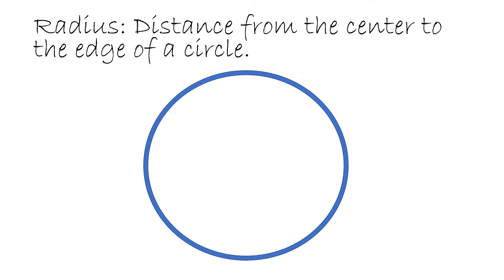The radius is the distance from the center to the edge of the circle. So here we have a blue dot — that's the center of the circle — and watch the red line from the center to the edge. That is the radius.